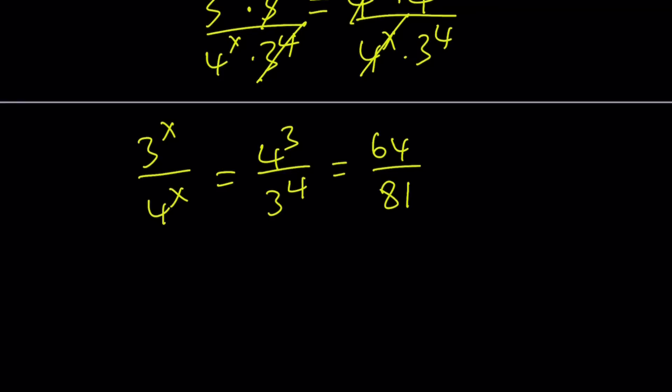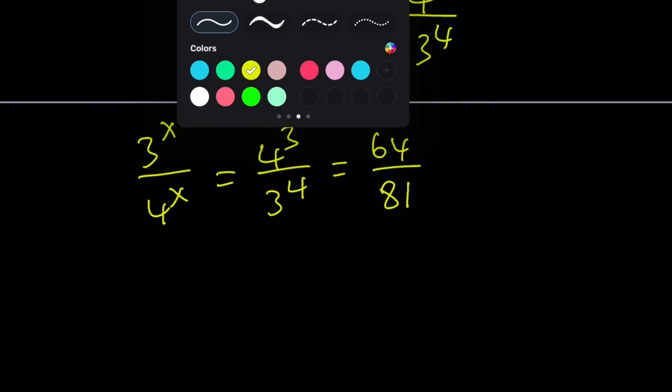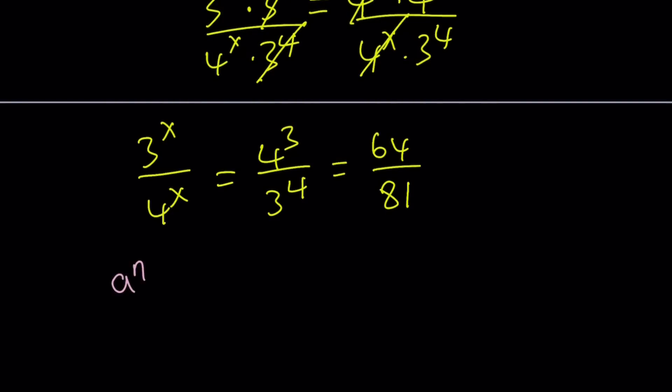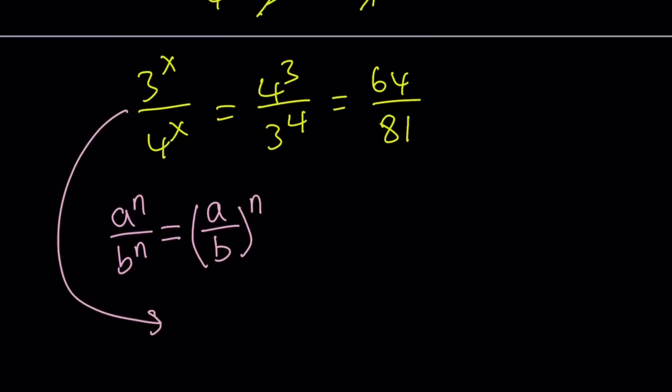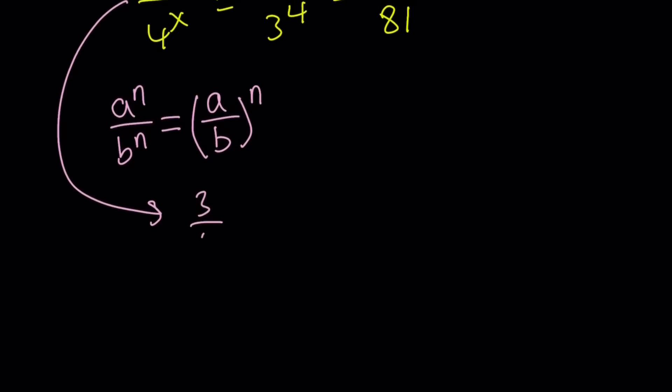We got something like this, but how do you solve for it? We still have something that's a quotient of two exponentials. Properties of exponents comes to the rescue. When you have something like a to the n divided by b to the n, this can be written as a over b to the power n. If you are dividing two powers with the same exponent, then you can divide the bases and use the same exponent. That's the property we're going to use here. This can turn into 3 over 4 to the power x equals 64 over 81.